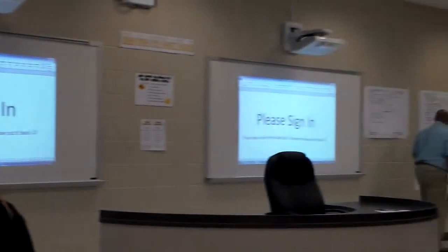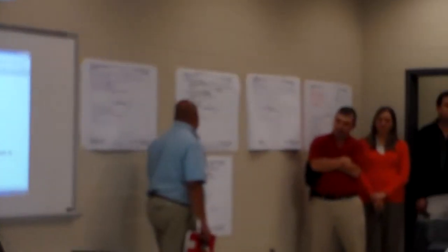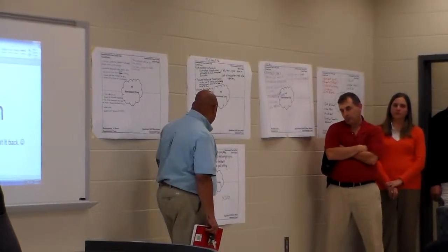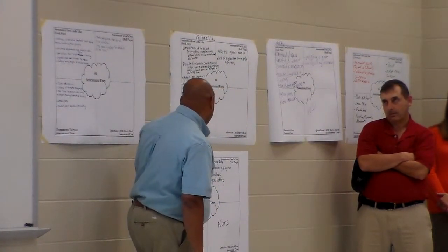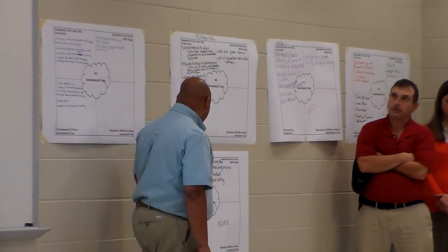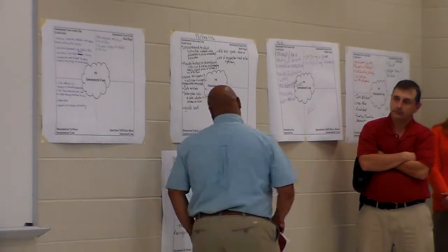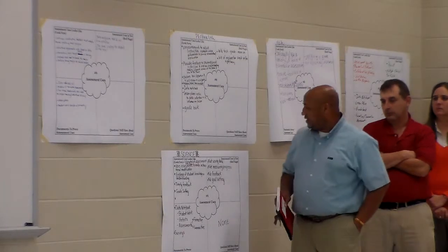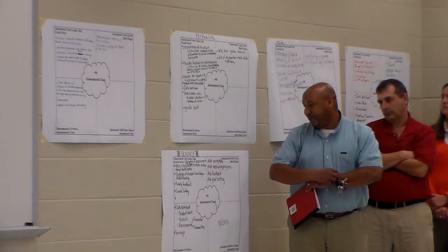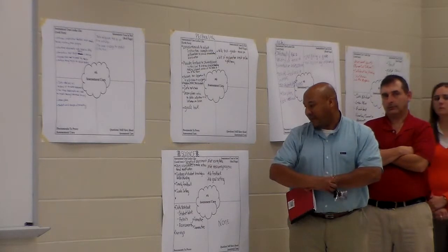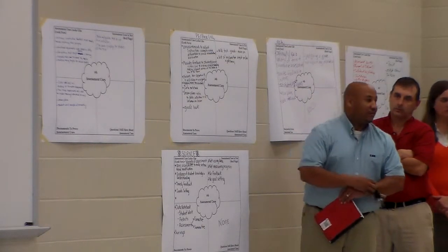Science: assessment uses look like a variety of assessments and using assessments with feedback. Documents to prove include a data notebook, student work, pre-tests, formative and summative assessments, and student surveys. Assessment uses is not failing to use data, not measuring progress, not providing feedback, and no goal setting.